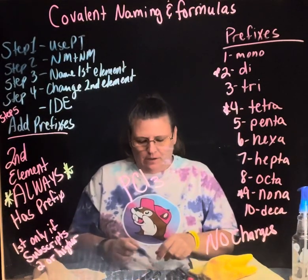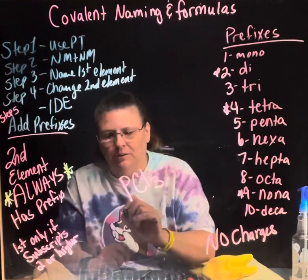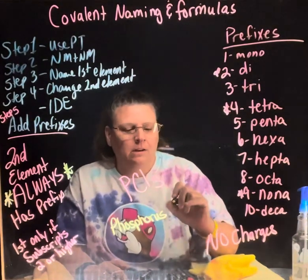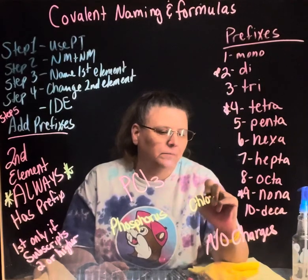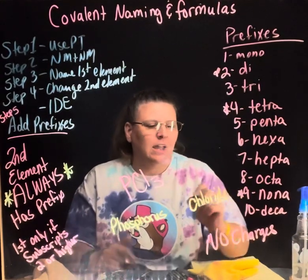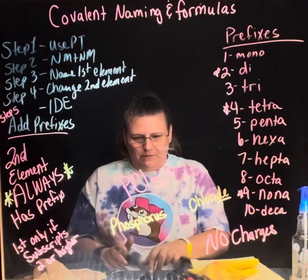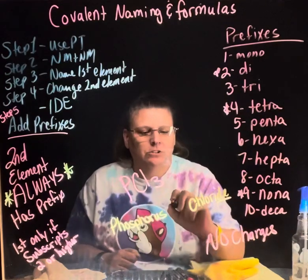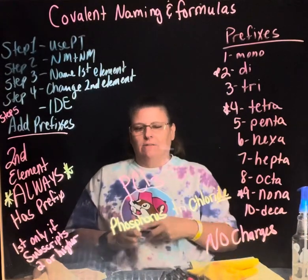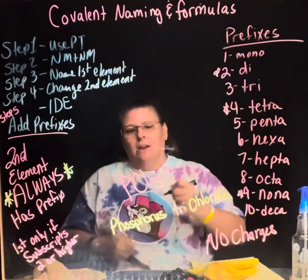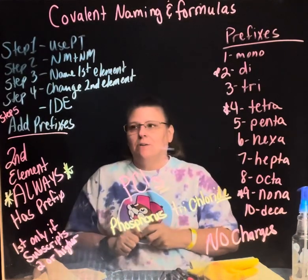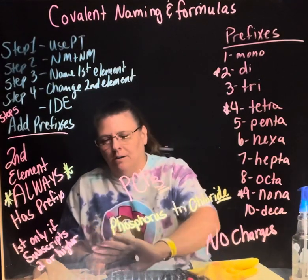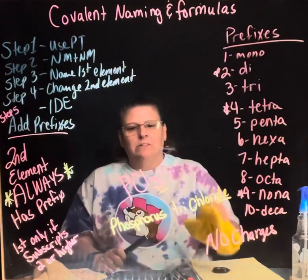Let's do PCl₃. Write the name: the first element is phosphorus. The second becomes 'chloride' with the -ide ending. Look for prefixes — the first element has no subscript shown, so we leave it alone with no prefix. The second subscript is three, so it gets 'tri': trichloride. The final name is phosphorus trichloride. If you don't see a subscript on the first element, don't add a prefix.